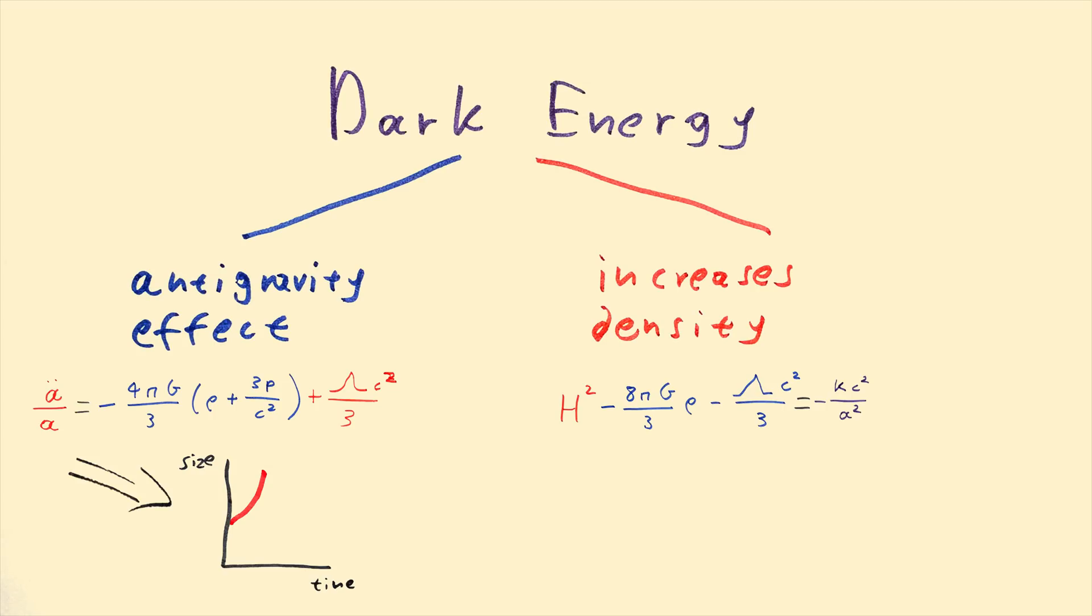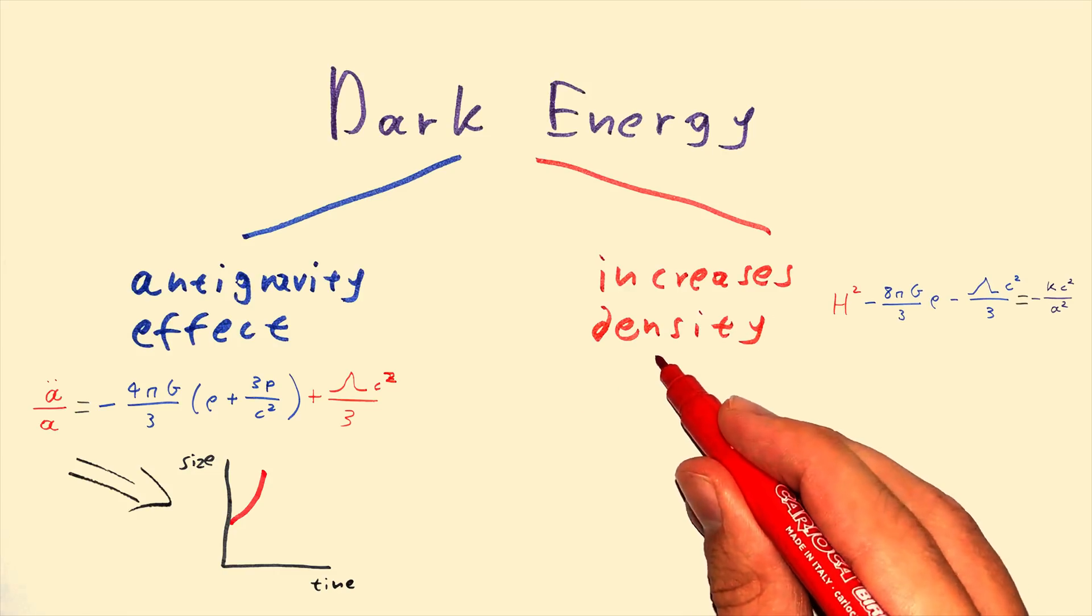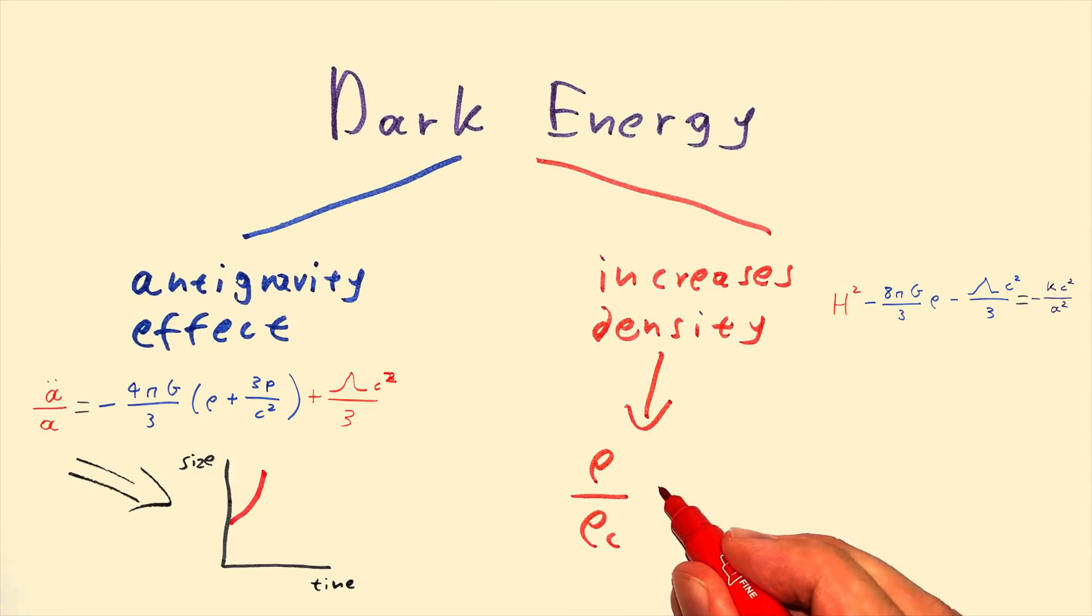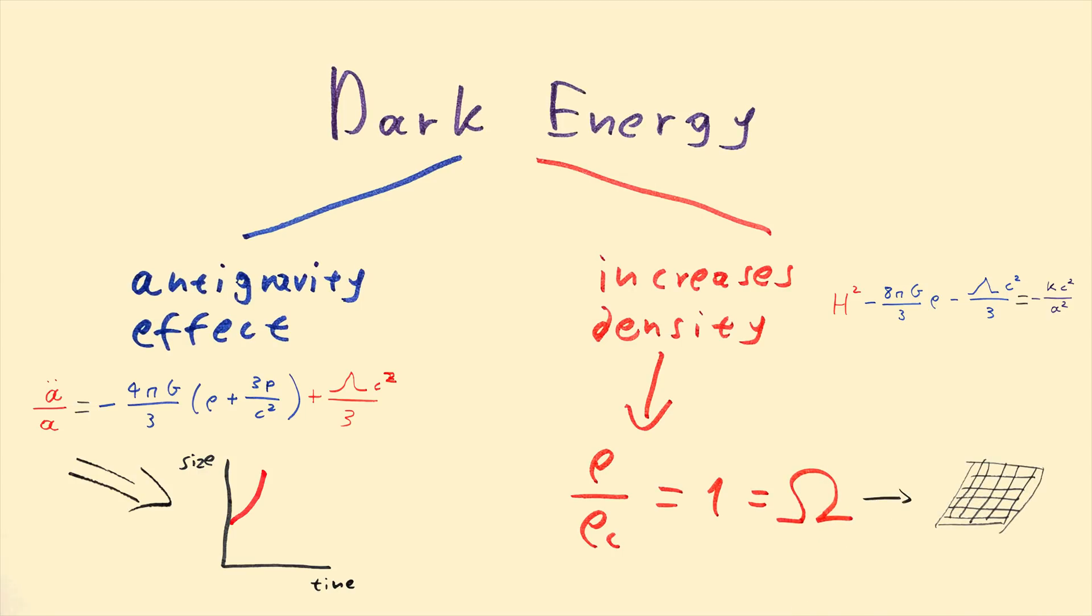The former role is the reason the expansion accelerates, because otherwise it will slowly decelerate, but never reach zero. And the latter role is the reason the density of the universe is high enough to reach the critical density and result in a flat geometry.